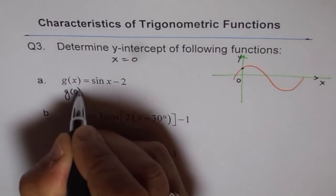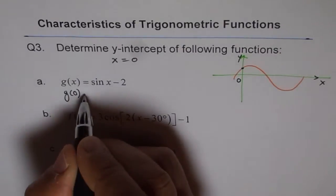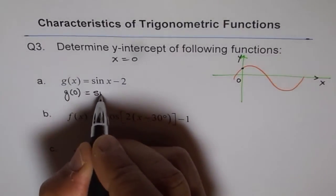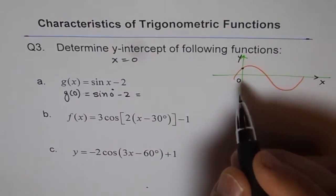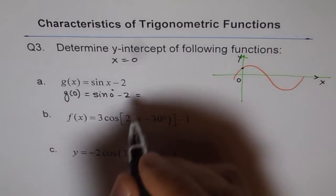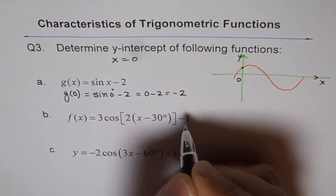So we get g of 0. That means the value of function at 0, which is y-intercept, is equal to sin of 0 degrees minus 2. And what is sin of 0 degrees? At 0, sin is 0. So it is 0 minus 2.